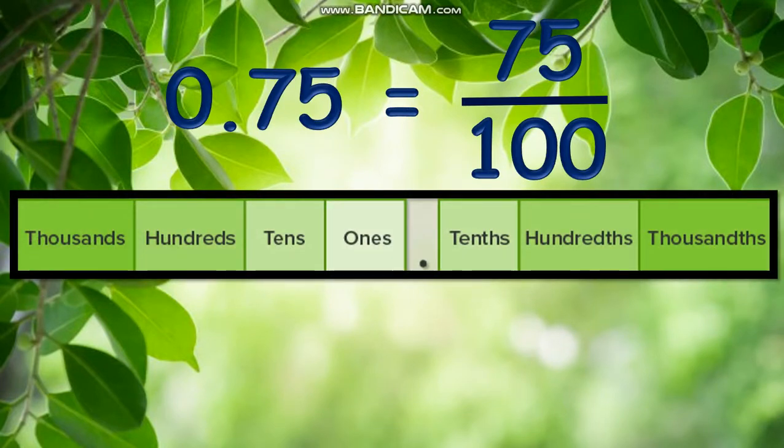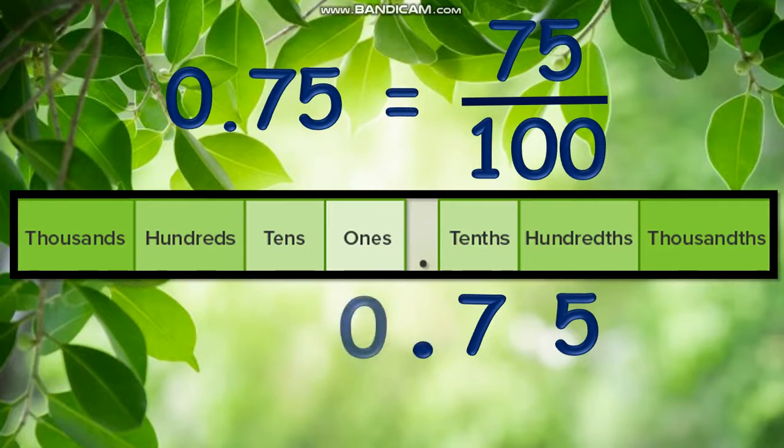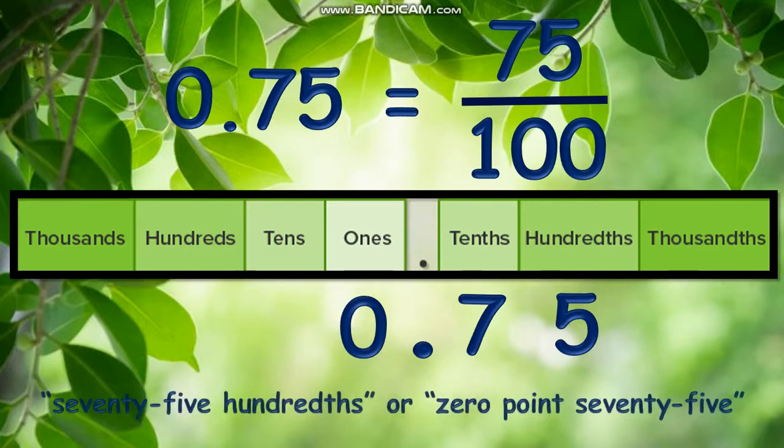Since 75 hundredths is our fraction, 7 is in the column of tenths place, 5 is in the hundredths place with the decimal point on the left of 7, and next is the whole number 0. Therefore, we can now read this decimal as 75 hundredths or point 75.